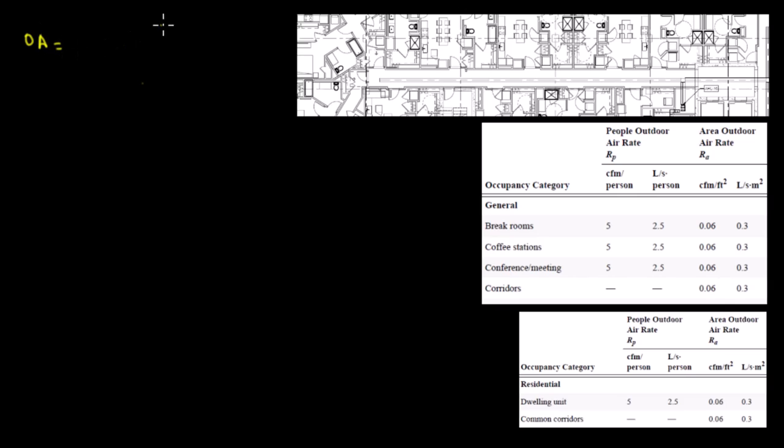To begin with, the formula is: outside air equals RP times PZ plus RA times AZ, and everything is divided by EZ. That's going to be the main formula for outside air, and everything relates to the number of people or area — pretty much number of people, area, and air rate.